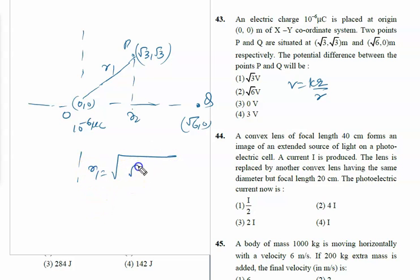r1 equals the square root of (√3 - 0)² + (√3 - 0)². This gives √(3 + 3) = √6.